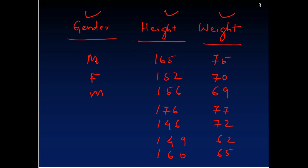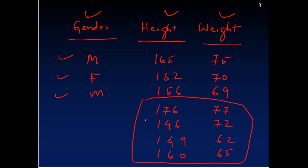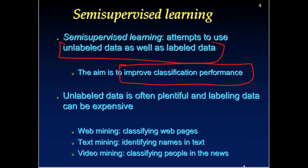Three of the data points are labeled — the first is male, the second is female, and the third is again male. This is labeled data, and we can use supervised learning algorithms to find the probability of someone being male or female. The last four data points are unlabeled — we do not know whether they are male or female. Unlabeled data is expected to improve classification performance when used along with labeled data.